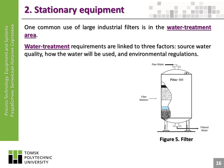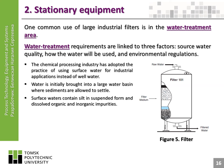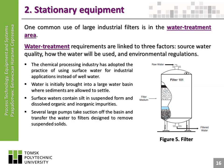One common use of large industrial filters is in water treatment. Water treatment requirements are linked to three factors: source water quality, how the water will be used, and environmental regulations. The chemical processing industry uses surface water for industrial applications. Water is initially brought into a large water basin where sediments settle, and surface waters contain silt in suspended form and dissolved organic and inorganic impurities. Several large pumps take suction off the basin and transfer the water to filters designed to remove suspended solids.